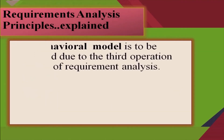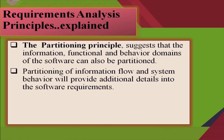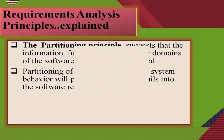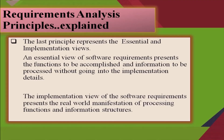The third principle of requirement analysis is about the behavioral model, which is used to describe the overall behavior of the system. The fourth principle is the partitioning principle, which suggests that the information, functional and behavioral domains of the software can be partitioned, providing additional details into the software requirements. The fifth principle is about essential and implementation views: the essential view presents the functions to be accomplished without going into implementation details, while the implementation view presents the real-world manifestation of processing functions and information structure.